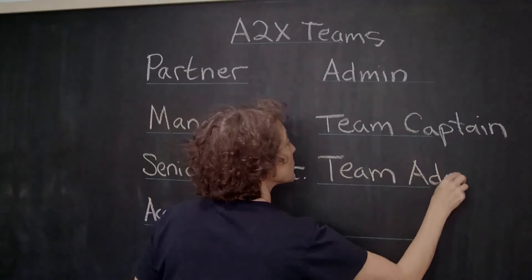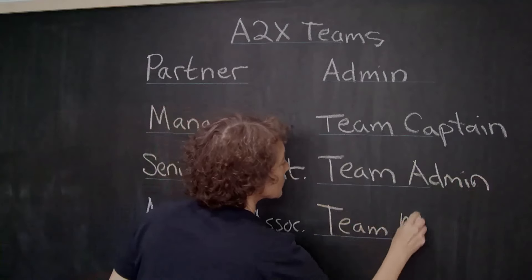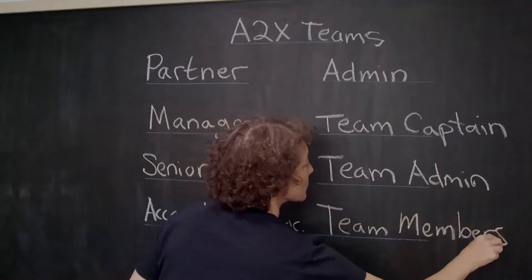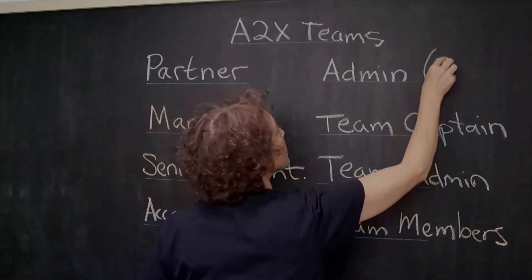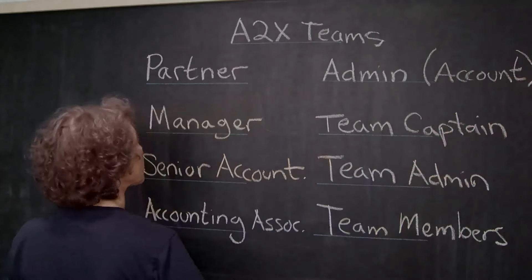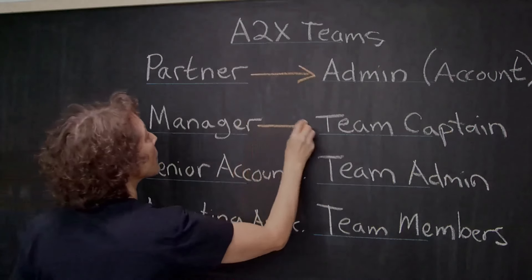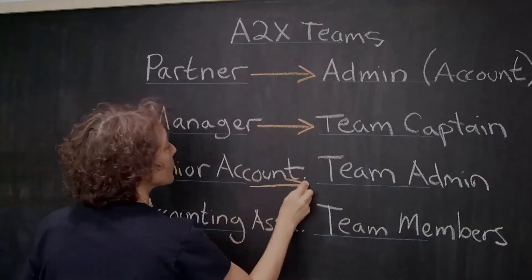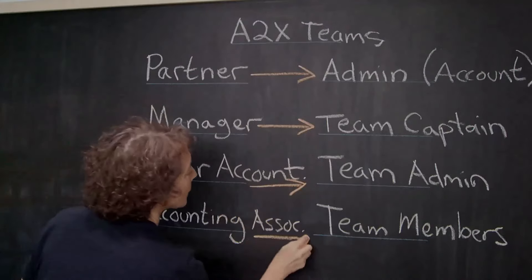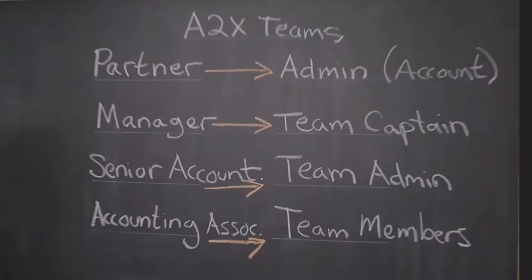This person, the team captain, cannot be changed. The team captain can create all the teams, invite all the team members, or invite a team admin to each team, and the team admin then invites the team members to their specific team. The senior accountant overseeing processes carried out by accounting associates is likely to be the team admin — a person who can invite and remove team members, but not dissolve the team. Accounting associates would be the team members, staff invited to a team to do specific processes on an account, and their work can be categorized by their team names.